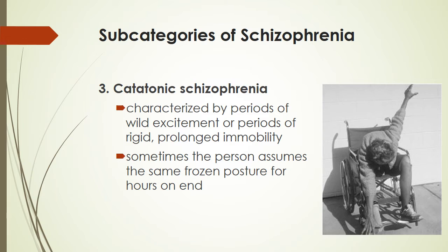Then there is Catatonic Schizophrenia, which is characterized by periods of wild excitement or periods of rigid, prolonged immobility. Sometimes the person assumes the same frozen posture for hours on end. What you see here on the right is an example of someone in a fairly awkward position that they can hold for hours — it's almost as if their body and brain are no longer connecting with one another.